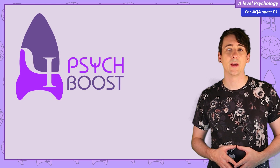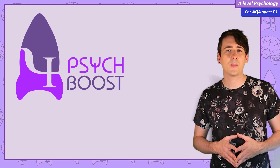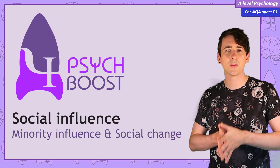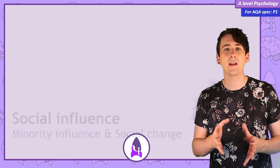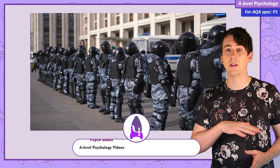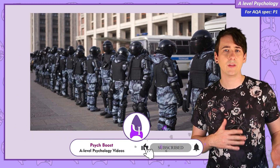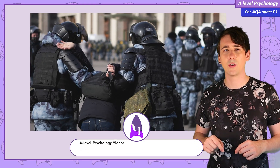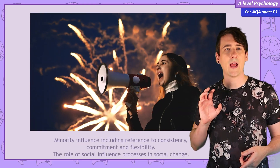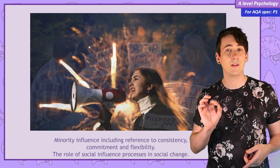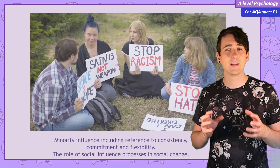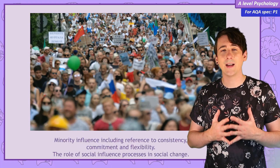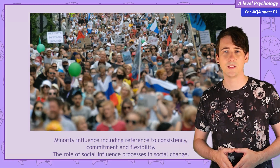As we've covered the social influence unit, you might have got the impression it's all about authority figures and majority groups forcing the individual to change their behaviour through obedience and conformity, and which individuals can resist that pressure. But in this video, we're going to turn this around and look at how it's possible for individuals and small groups to influence the behaviour and beliefs of larger groups, and even change entire societies.